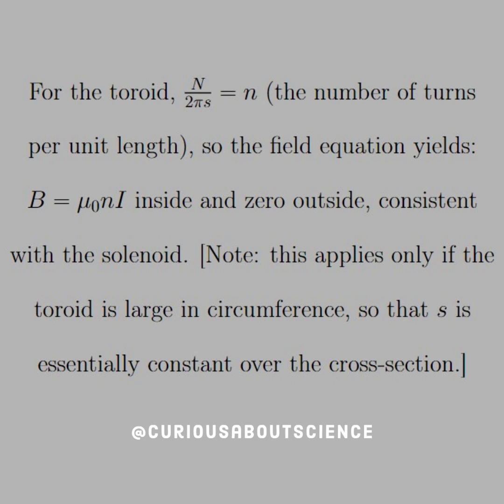We just need to make sure that this yields the B field of a solenoid. But we just need to make sure that this can only be applied if the radius of the toroid is large enough to where the circumference is essentially flat over that cross section.